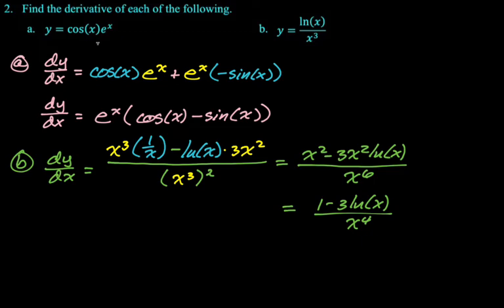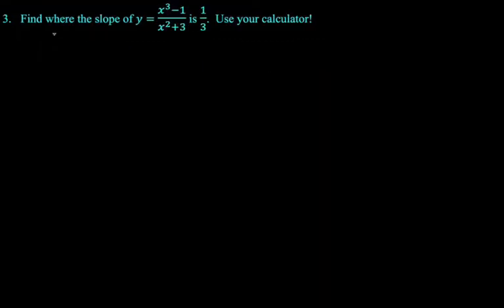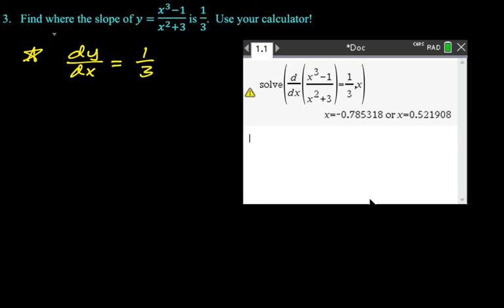Alright, next problem is find where the slope of y equals x cubed minus one over x squared plus three is equal to one third and use your calculator to do it, which you definitely want to do because this is a gross problem otherwise. So the problem that we're trying to solve is really dy/dx is equal to one third. And I'm just going to screenshot what I did on my calculator. Again, lots of videos of how to do these things. You should definitely check them out because using your calculator is just fundamental to the course.